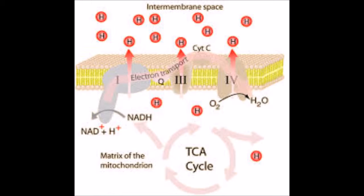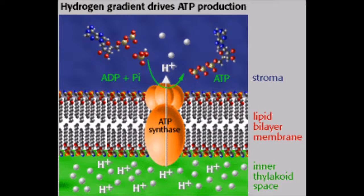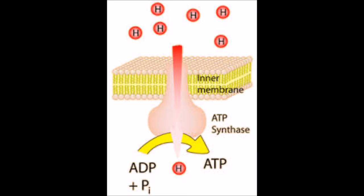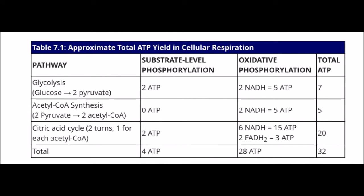With the transfer of electrons in complexes 1, 3, and 4, energy is released to help pump out protons. The protons in the intermembrane space create an electrochemical gradient. ATP synthase converts the energy of the electrochemical gradient into ATP using rotational energy. Electron transport chain yields roughly 28 ATP per glucose molecule.